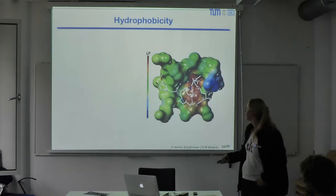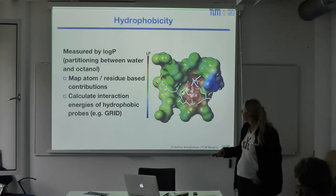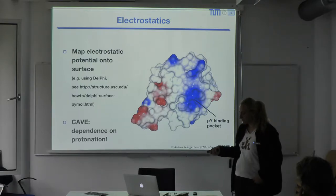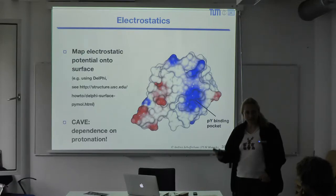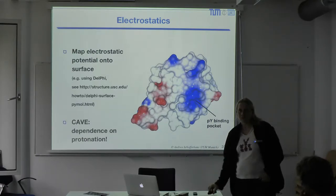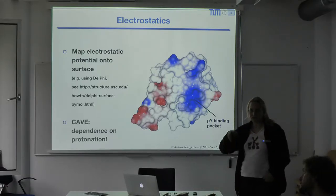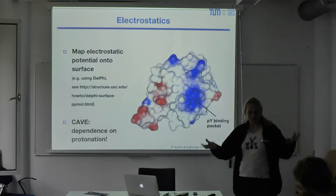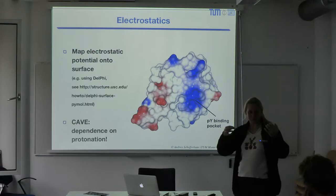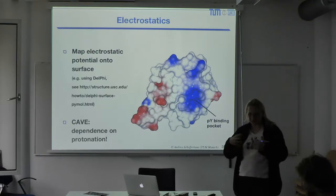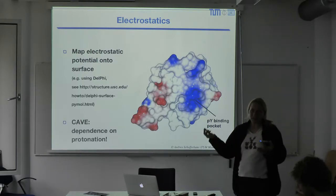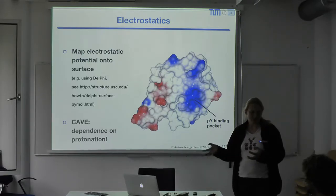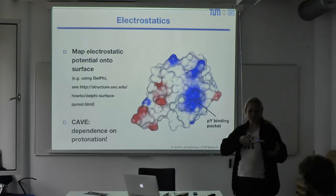A general observation: when you map a feature onto a protein using a graphics program, the exact result depends on the parameterization of the program. If you want to compare two different proteins, make sure the graphics is done by the same tool with the same parameterization. You wouldn't find a binding site is positively charged when it's actually negatively charged, but for comparing relative charge differences between two proteins, consistent parameterization is important.